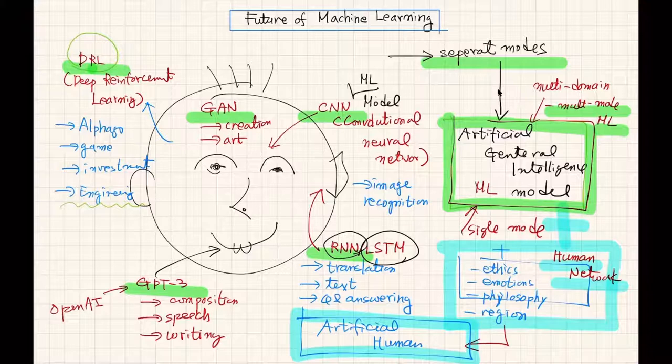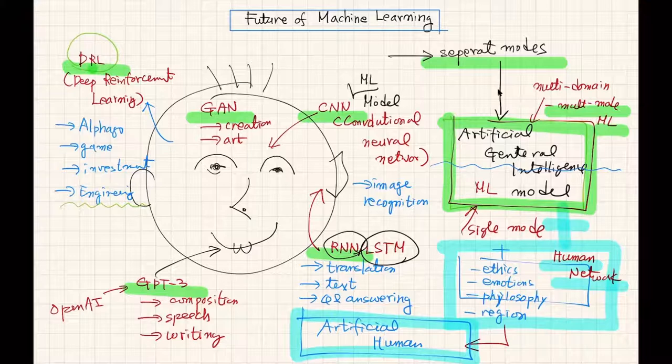In my class, we will stay somewhere in these sub-models — that is the end of our class scope. We are not going to go up to the human network and artificial human. But this semester, I'm going to give you the basics of all these models and what is going to be the future.